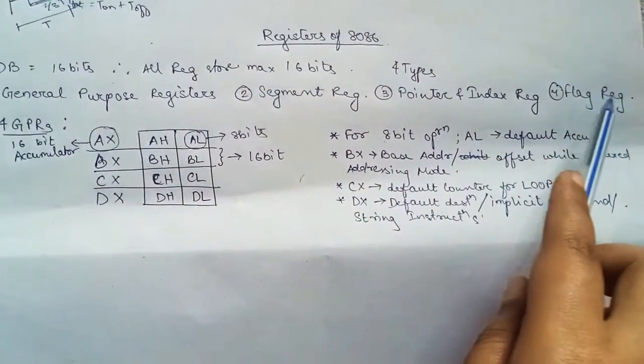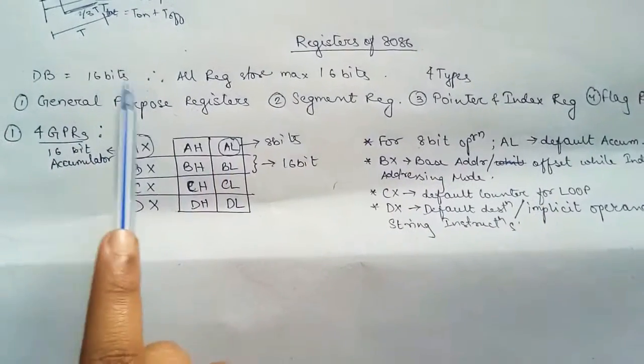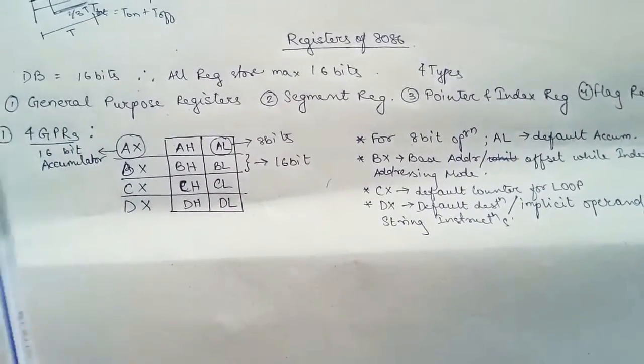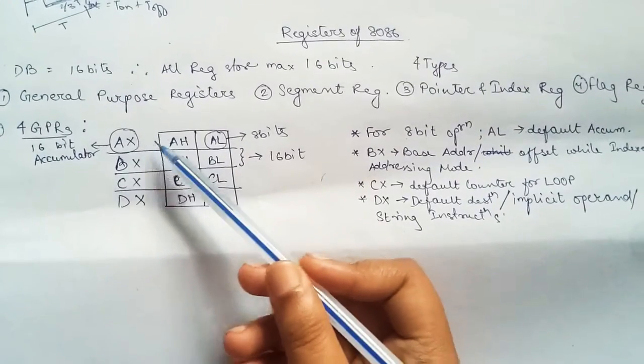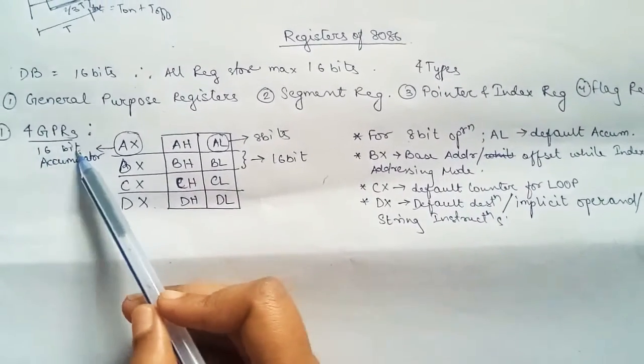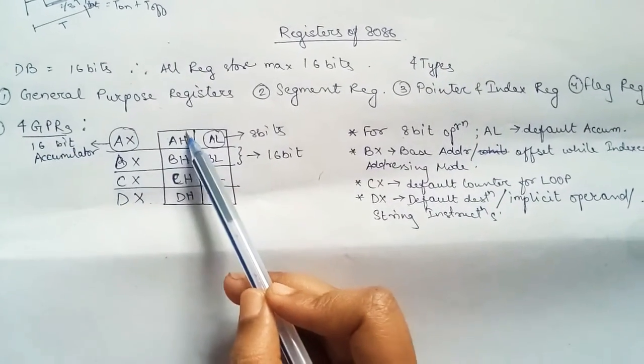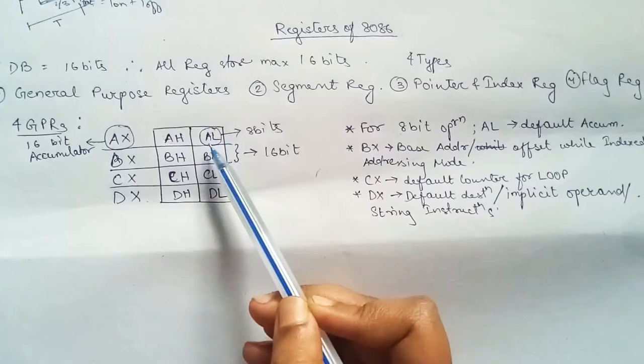First is general purpose register or GPRs. We have four GPRs in total, each of 16 bits. But that 16 bit is divided into two 8-bit registers.